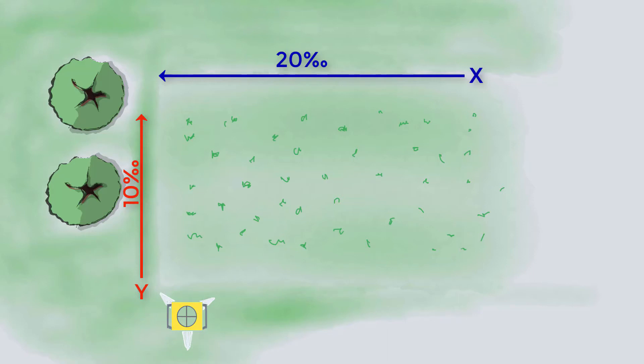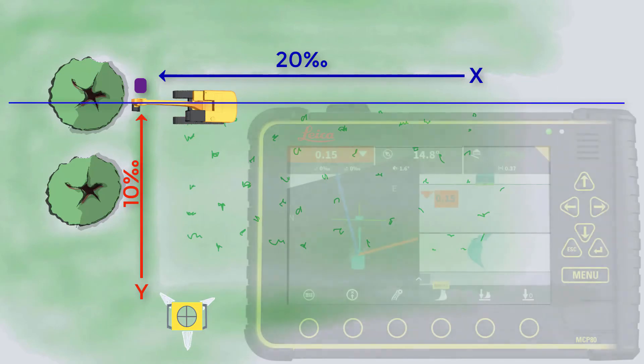We need a reference spot where we can bench the tool point. This could be a stake set by a surveyor, but in this example we will use a spot on the ground. Move the machine near to the chosen reference spot. Rotate the machine so the direction of the boom is aligned with the desired x direction.